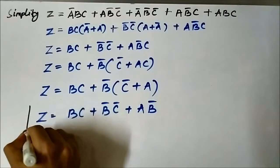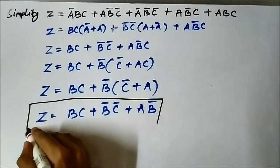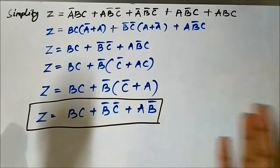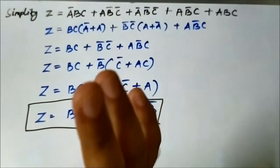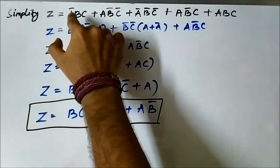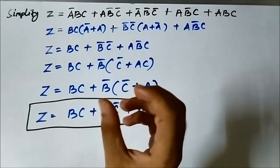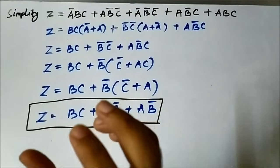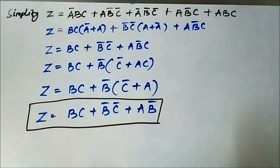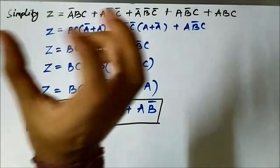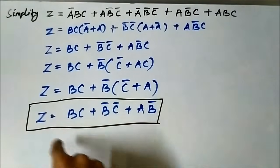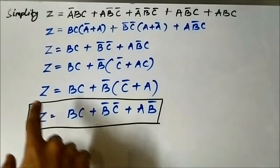So the final Boolean expression is z = b·c + b̄·(c̄ + a), or equivalently b·c + b̄·c̄ + a·b̄. While simplifying any Boolean expression, first identify common terms, then arrange them so you can apply Boolean algebra rules. You must be clear about the rules, keep identifying patterns and common terms until you reach a simplified reduced expression.